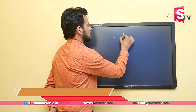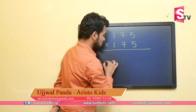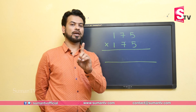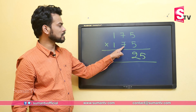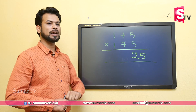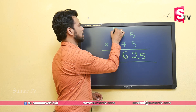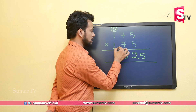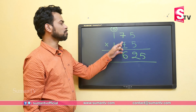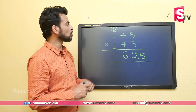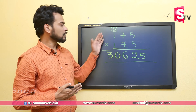One more example: 175 multiplied by 175. Step one: 5 multiplied by 5 is 25. Step two: tens digit 7 multiplied by its successor 8 gives 56 — we write 6 and carry 5. Step three: take 17 and add the successor of the tens digit: 17 plus 8 equals 25, plus the carryover 5 gives 30. So 175 squared is 30625.